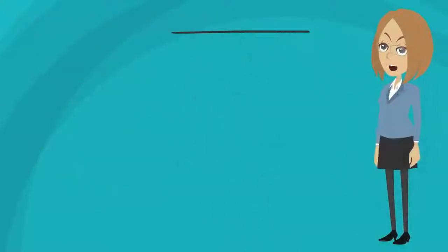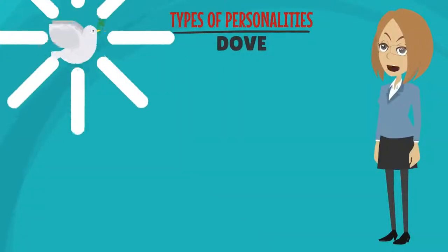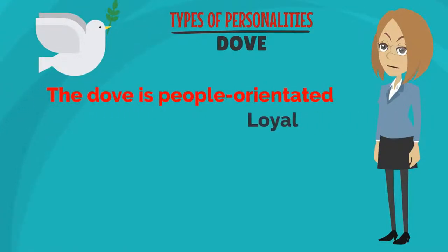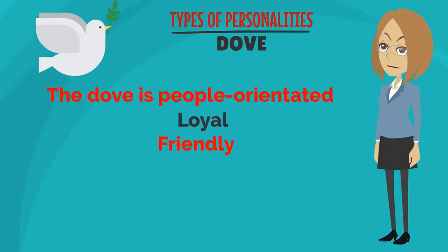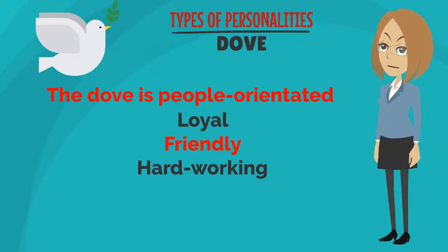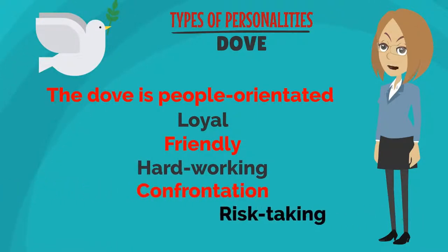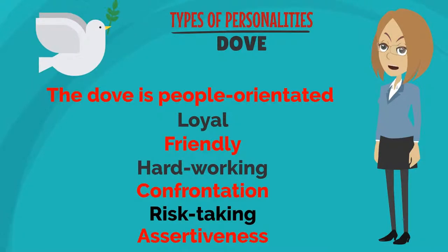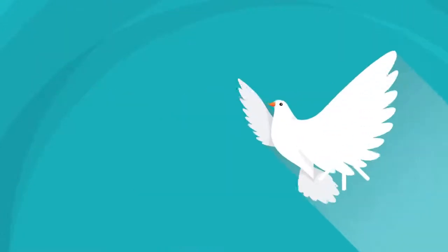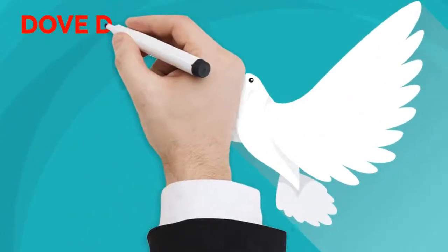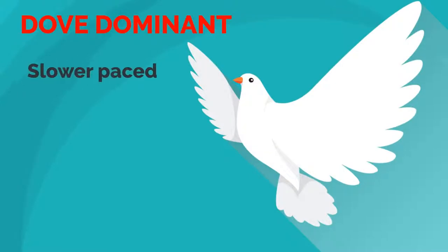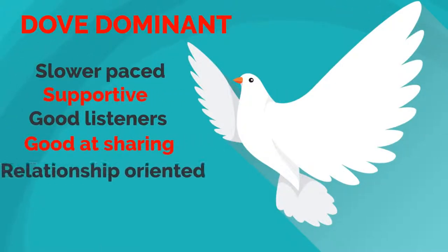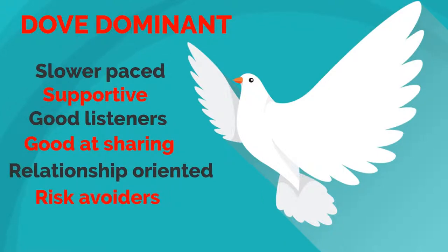Dove personality traits: people-oriented, loyal, friendly, hardworking, and a great team player, but tends to avoid change, confrontation, risk-taking, and assertiveness. Doves are slower-paced, supportive, good listeners, good at sharing, relationship-oriented, and risk-avoiders.